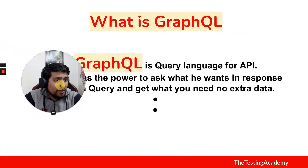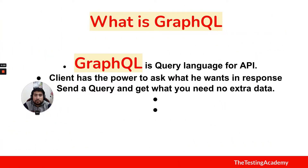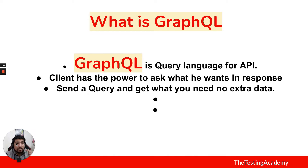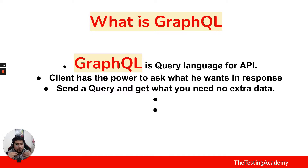So first of all, what is GraphQL? GraphQL is a query language for an API. Whenever you are using a REST API, you cannot query selectively. For example, you make a GET request to fetch all persons - it gives you all persons, but suppose I want only one or two keys, you cannot do that. There is no query mechanism. That's where GraphQL comes in - the client can get whatever they ask for.